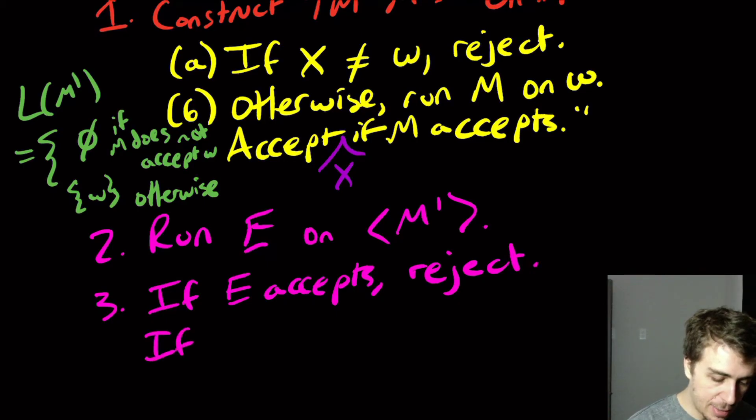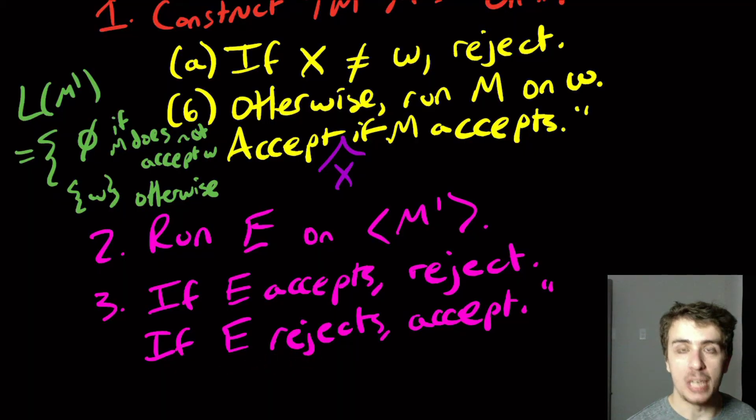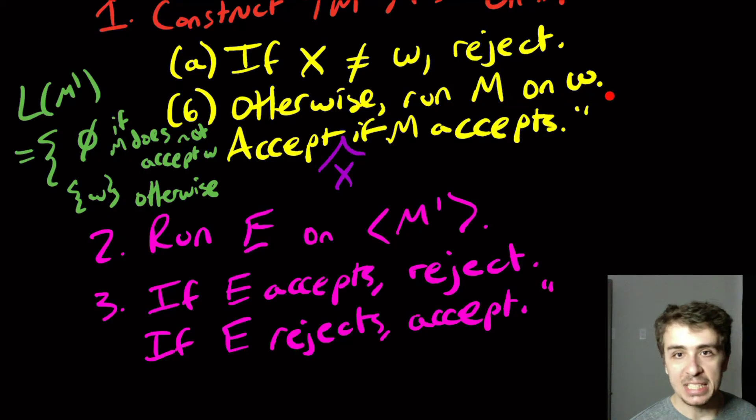And if E rejects, we need to accept. And the reasoning is very similar. If E says no, your language is not empty, that means that we're in this second situation right here, which means that the only way we could have gotten to this accept line right here is if M did accept W, which is the problem we're trying to solve. And so we need to say accept down here.